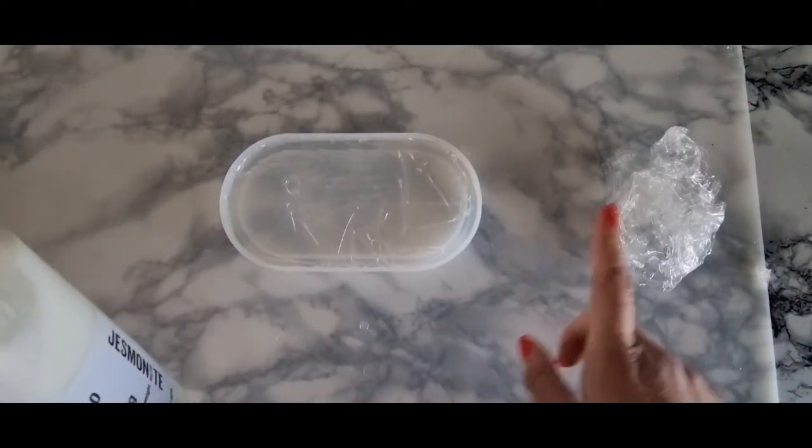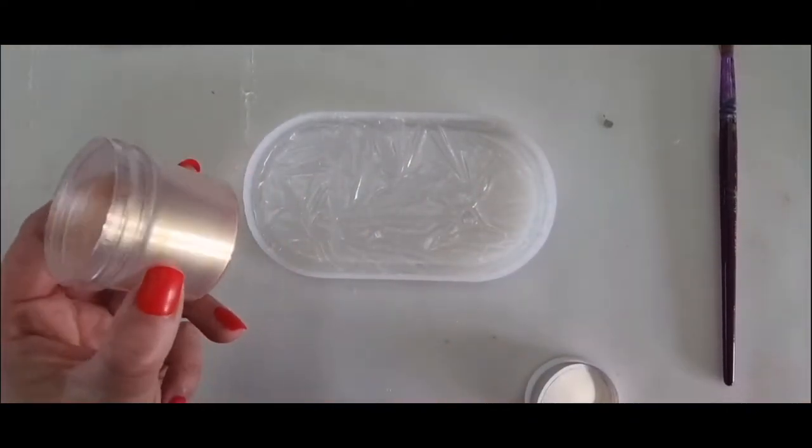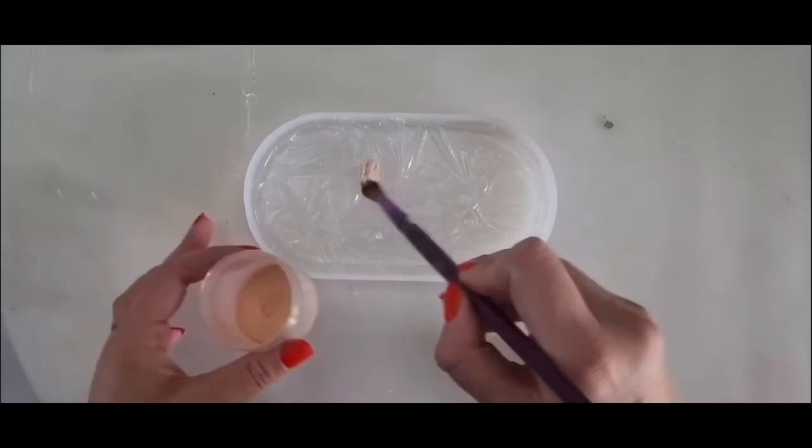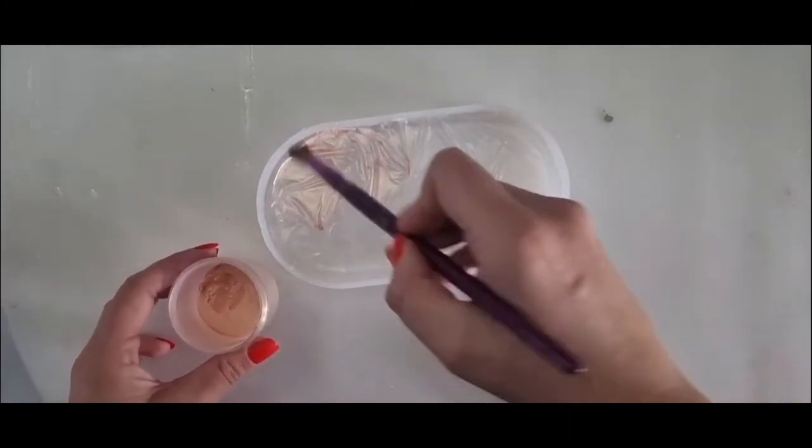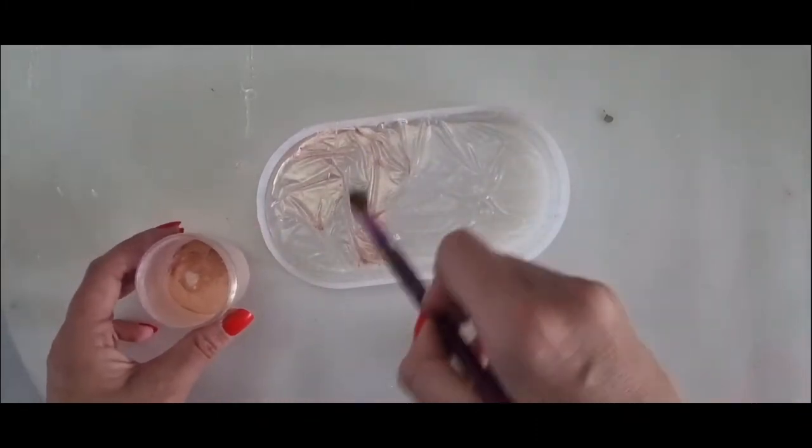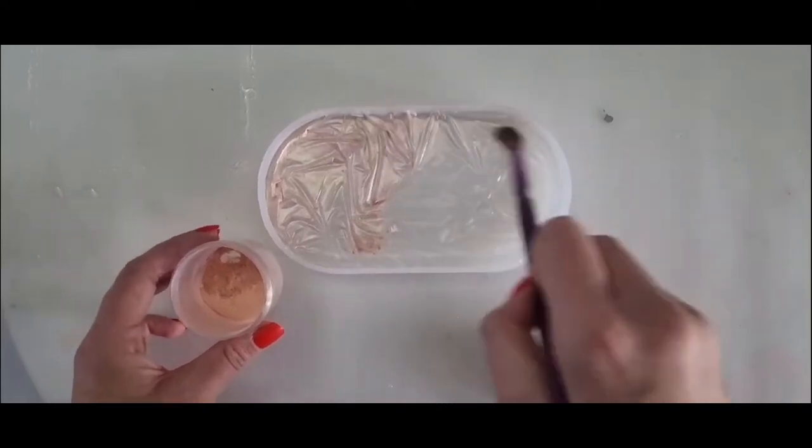I'm going to use the jesmonite to then top it up, so it's not all resin—it's going to be jesmonite as well. These videos this week are going to be with both the resin and jesmonite mixture. We'll go for a gold, like rose gold look.